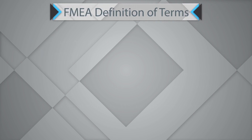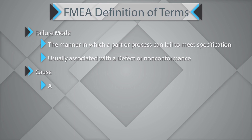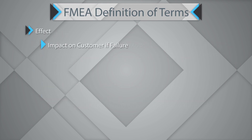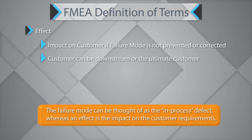Let's understand some common terms and their definitions as used in FMEA. First, Failure Mode — the manner in which a part or process can fail to meet its specification, usually associated with a defect or non-conformance. Causes are sources of variability associated with the key process input variable. And the Effect is the impact on the customer if the failure is not prevented or corrected. The customer can be downstream or the ultimate customer. The failure mode can be thought of as an in-process effect, whereas an effect is the impact on the customer requirement.